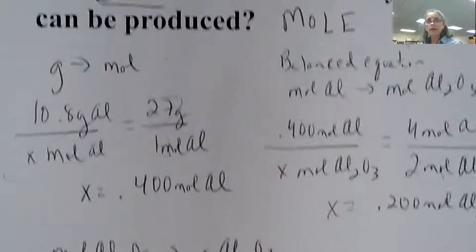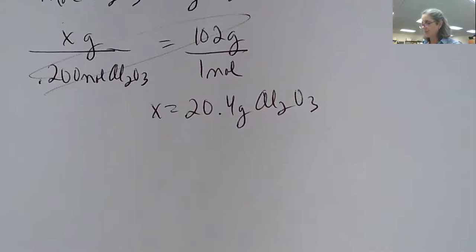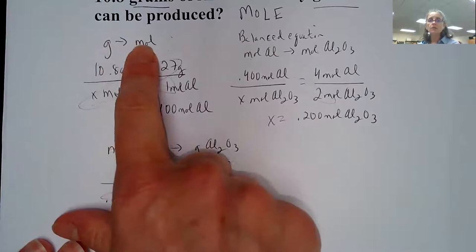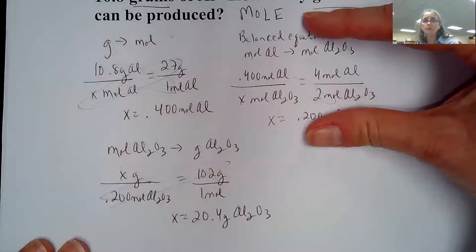That's a gram to gram problem: 10.8 grams of aluminum will produce 20.4 grams of aluminum oxide. You need three steps: grams to moles, then use the balanced equation to do your mole-to-mole conversion in the middle, and then go from moles to grams.